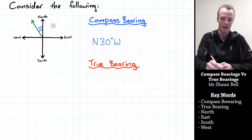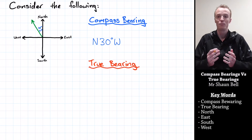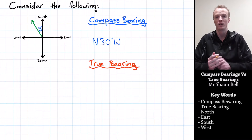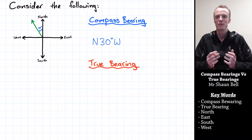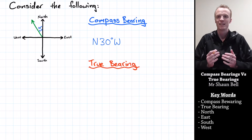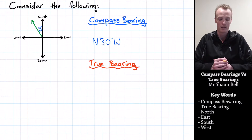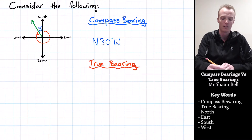Now let's look at what happens when we calculate the true bearing. The biggest difference between compass bearing and true bearing is that true bearing always starts at the North direction — it doesn't answer the question of whether we start from North or South. The second biggest difference is it always measures degrees in a clockwise fashion from North. We always start at the North bar and travel in a clockwise direction until we arrive at the bearing we want to indicate.